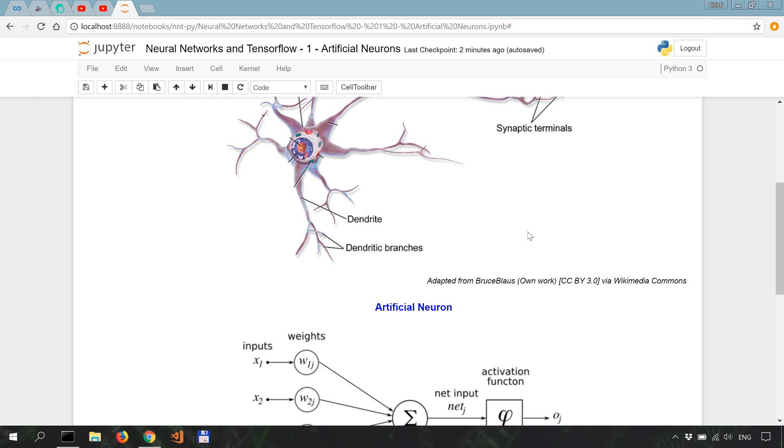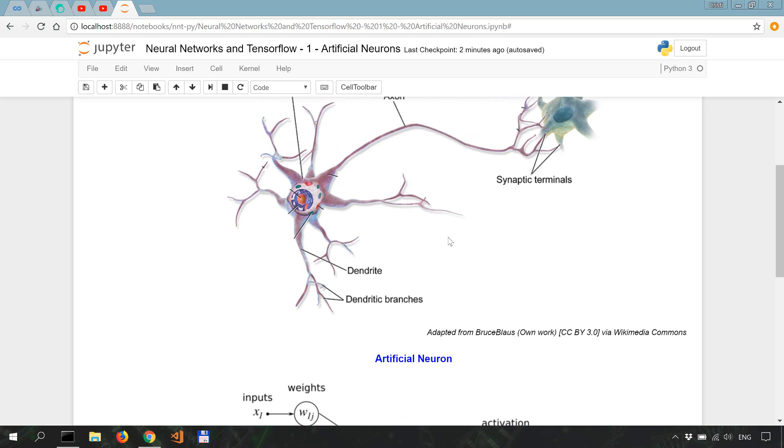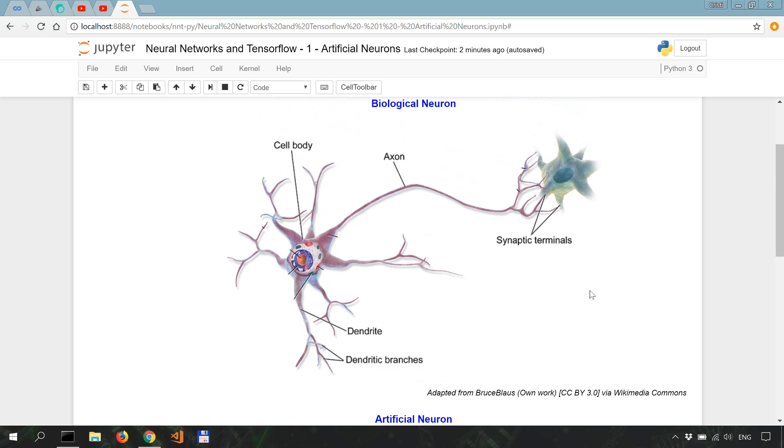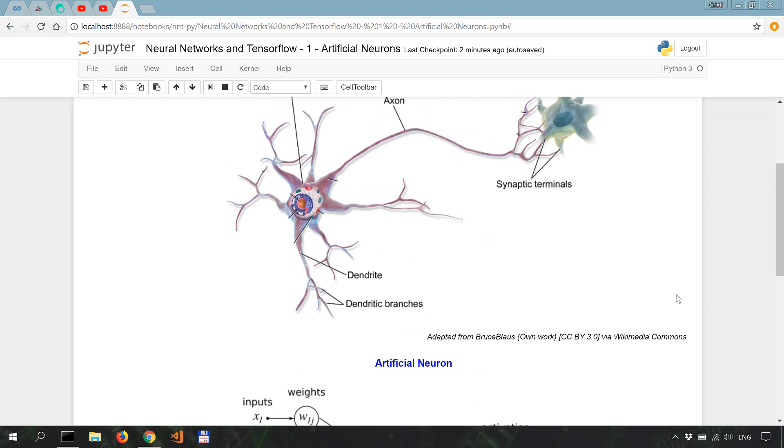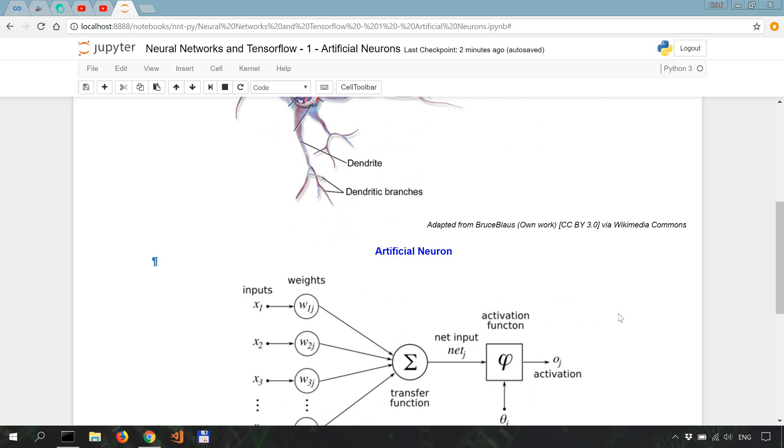We have the strength of the input, which we call weights. Then we have functions to sum, to activate, to transform, or to perform other operations. And then we have outputs.